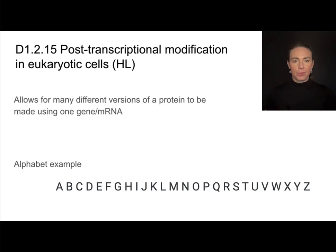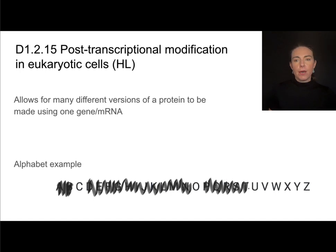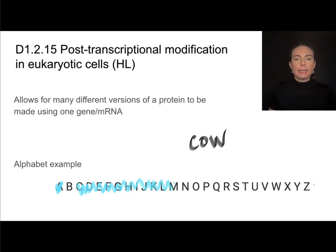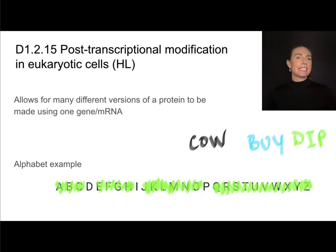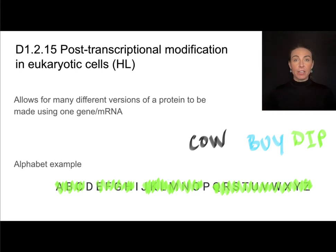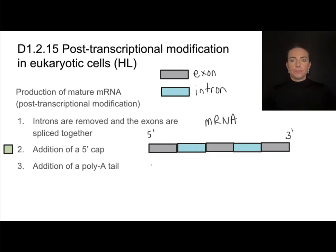Let's use the alphabet as an example. Say I have all the letters of the alphabet and I cut out all of the letters except for C, O, and W — I've spelled the word 'cow.' I can take the exact same sequence of letters and by eliminating a different combination, I can make an entirely different word. You could even make words of different lengths. Much like this alphabet, when we take mRNA and cut out different sections, we can make different versions of that mRNA, which will be translated into different amino acid sequences, even though they were all transcribed from the same gene.